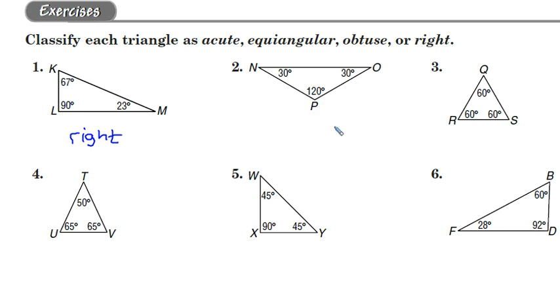Alright, number two has 120 degrees, the one and only angle that is greater than 90. Therefore, this is an obtuse triangle.